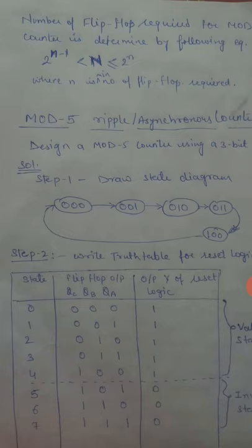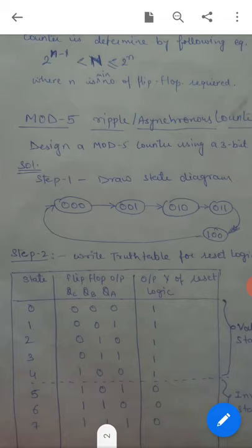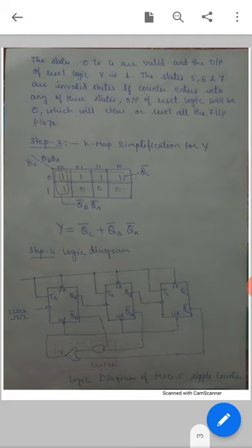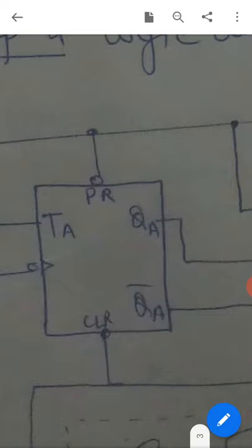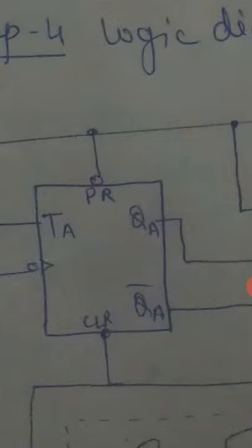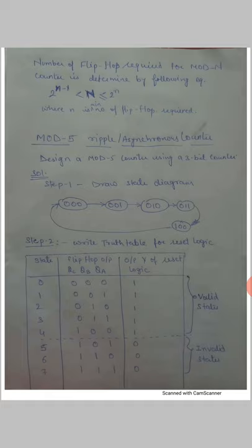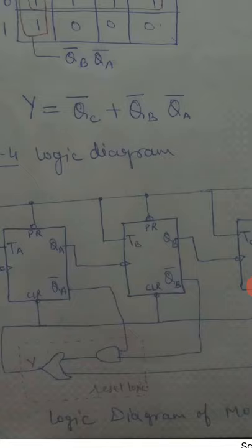Now for any mod-n counter we have to design a reset logic. We have discussed in flip-flops that there are preset and clear signals — these are active low signals. In any flip-flop we can have a preset and clear input. If preset is active low, the flip-flop will be set. If clear is active low, the flip-flop will be cleared and reset, meaning the Q value is 0. We are going to use this logic for the mod-5 counter design by applying reset logic to the flip-flops.